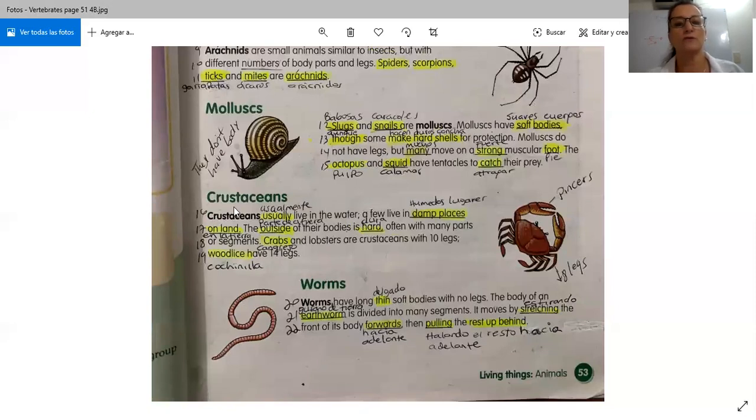Los crustáceos. Crustaceans. Crustaceans usually live in the water. A few live in damp places on land. The outside of their bodies is hard, often with many parts or segments. Crabs and lobsters are crustaceans with 10 legs. Woodlice have 14 legs. Los crustáceos usualmente viven en el agua. Algunos viven en sitios húmedos, lugares húmedos en la tierra. Charquitos y eso, viven muchos de ellos. La parte de afuera de sus cuerpos es dura. Frecuentemente con muchas partes o segmentos. Los cangrejos y las langostas, los lobsters, son crustáceos con 10 patas.